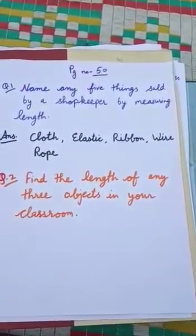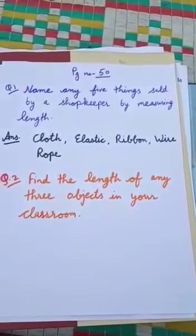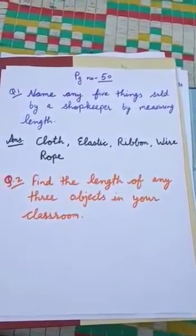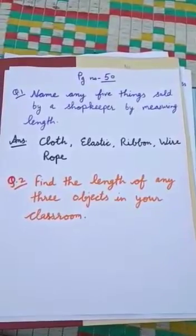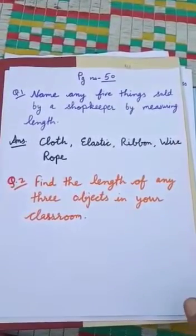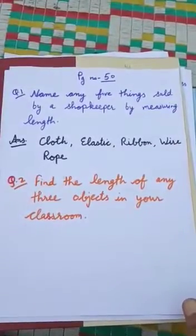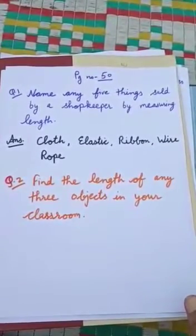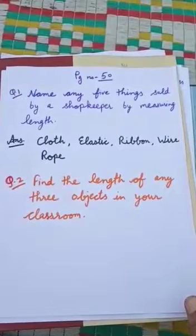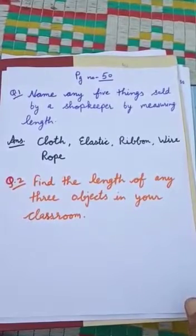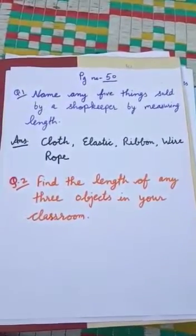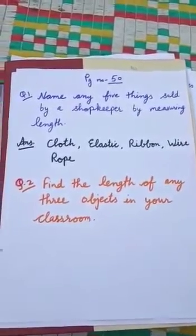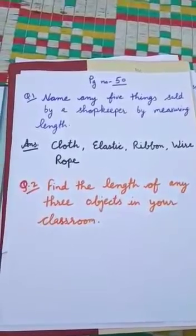Let us start the review exercise. Question 1: Name any five things sold by a shopkeeper by measuring length. The answer is cloth, elastic, ribbon, wire, rope. Any other similar things may also be taken.